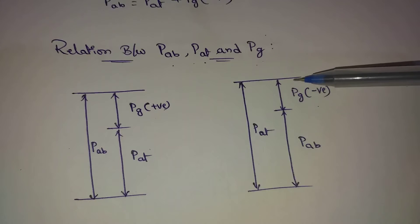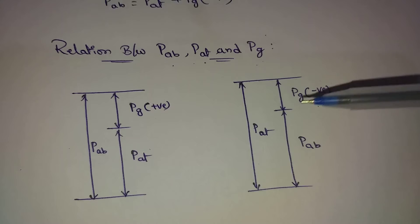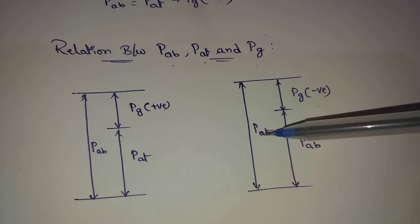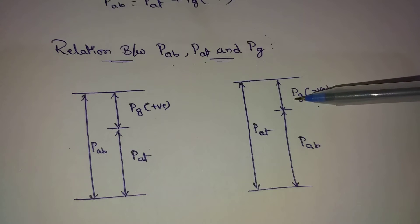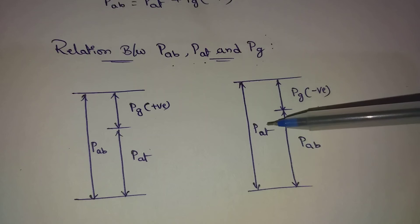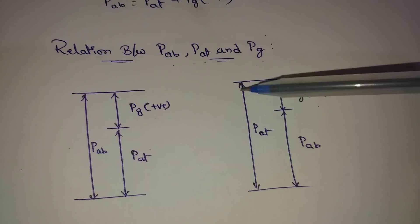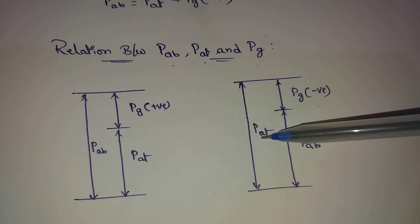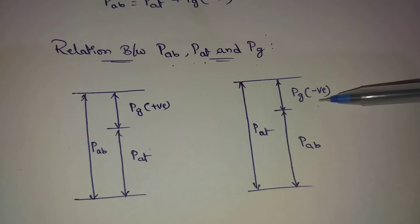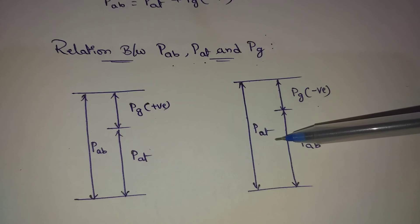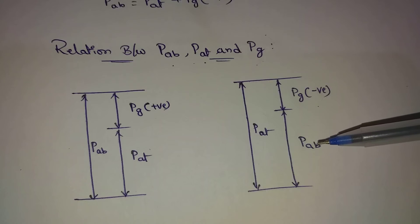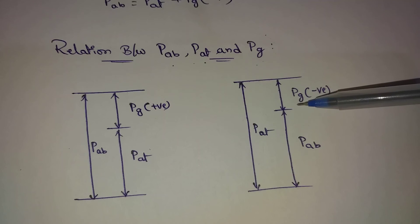For negative gauge pressure, the atmospheric pressure value equals zero at a certain reference, and the absolute pressure equals zero in the positive gauge reference. For negative gauge, the atmospheric pressure equals zero but absolute pressure equals zero here. So negative gauge pressure equals atmospheric pressure minus gauge pressure. This negative gauge pressure is also equal to vacuum pressure.